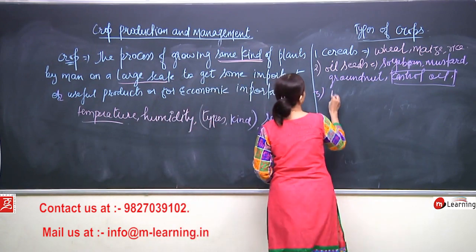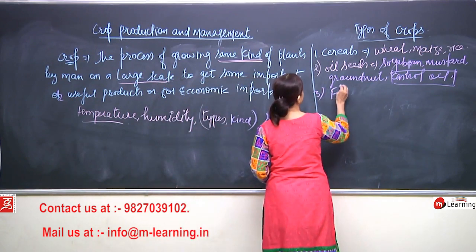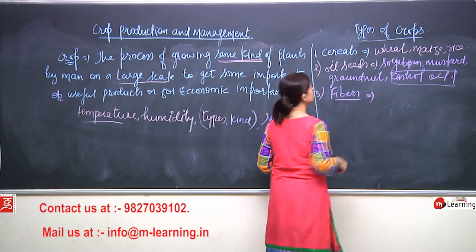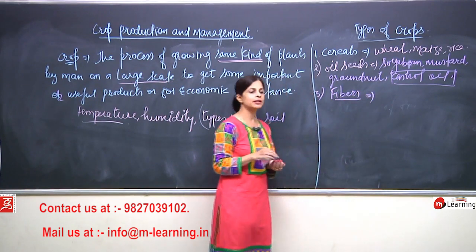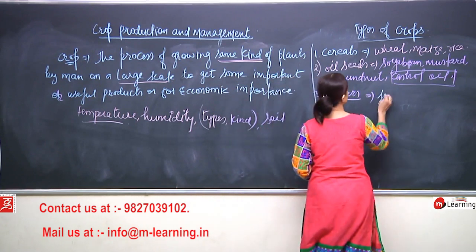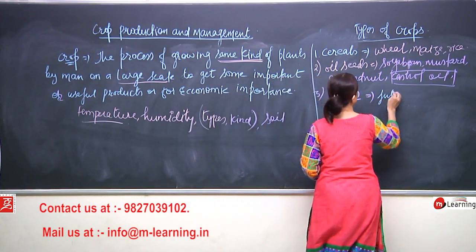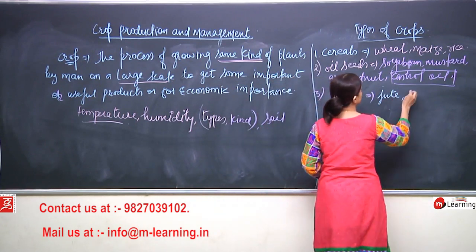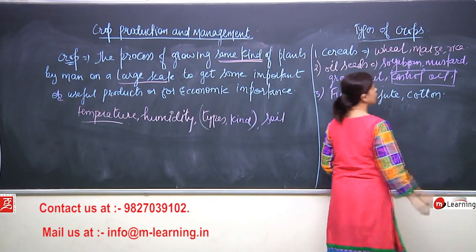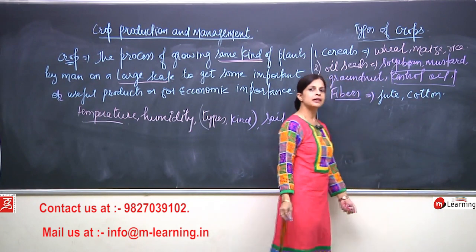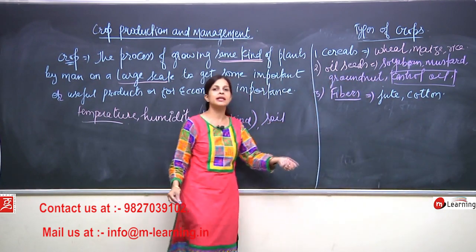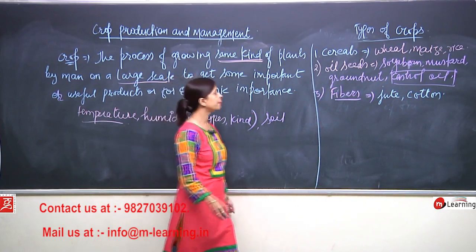Next are fibers. What is the meaning of fiber crops? For example, jute and cotton — all these come under which kind of crop? We will say it is a fiber crop.